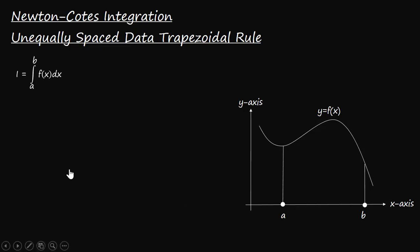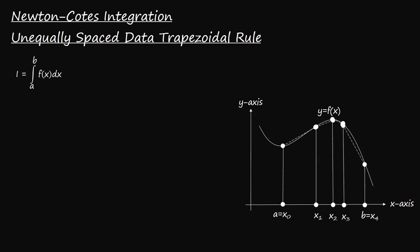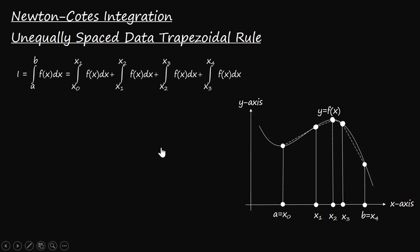For example, we want to integrate the function f(x) from a to b. Let's divide the given interval of integration from a to b into four sub-intervals with five data points, marked as x₀, x₁, x₂, x₃, and x₄, such that x₀ = a and x₄ = b. The integral of f(x) from a to b can then be computed as the sum of the integrations over each sub-interval. Now let's assume these data points are unequally spaced, such that the length of each sub-interval is different from the others.